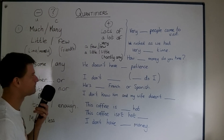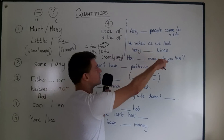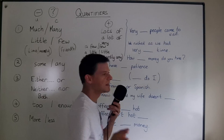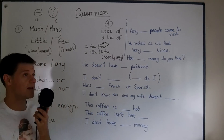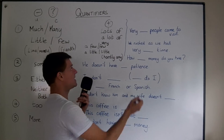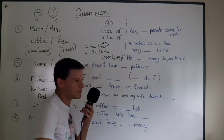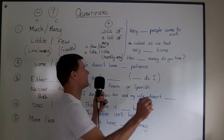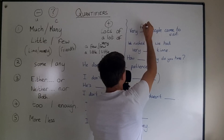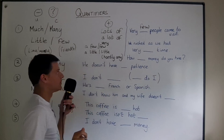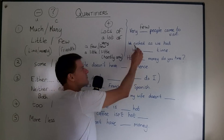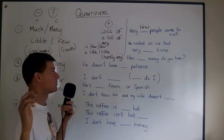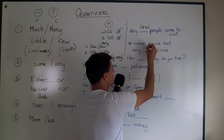How much, how many? Let's quickly do some questions. 'Very ___ people came to visit.' If we mean not many, we don't say 'very little people' because that means very small people. We say 'very few people.' 'We rushed as we had very ___' — meaning not much — we had very little time.